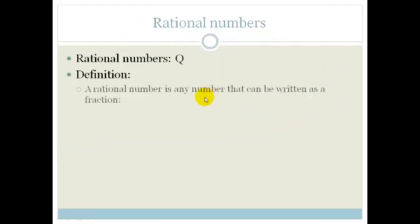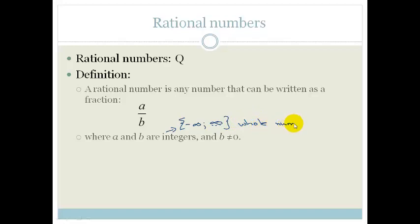Let's start with rational numbers. Rational numbers are defined as any number that can be written as a fraction, a over b, where a and b are integers and b does not equal naught. Remember, your integers are a set from minus infinity through to positive infinity, and they are whole numbers.